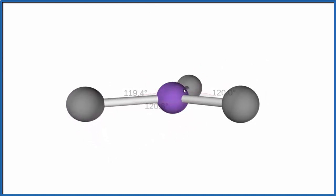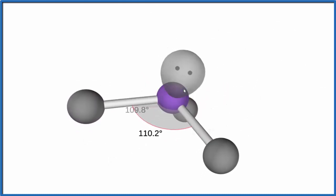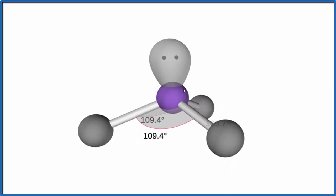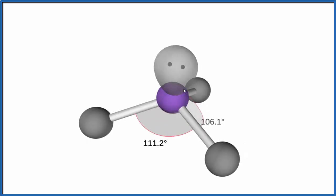Then we need to add that lone pair though. Put the lone pair there, and you can see it pushes everything down. We have what's called a trigonal pyramidal molecular geometry. Bond angle, again, probably going to be less than 109.5, probably a good bit less than 109.5, because of the lone pair here.